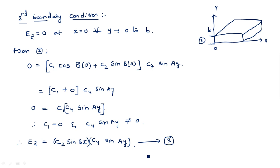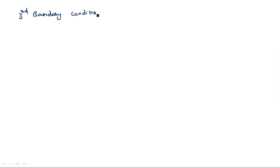The strategy is: take each boundary condition, substitute into the latest equation, and eliminate a constant. After two boundary conditions we now have ez = c2·sin(βx) · c4·sin(αy). Two more boundary conditions remain. Coming to the third boundary condition — this is the top edge of the rectangular waveguide.